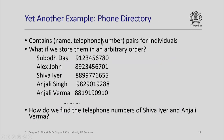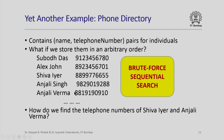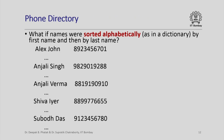Here is yet another example: consider a telephone directory, which usually consists of name and telephone number pairs. Suppose I listed out this telephone directory in a completely arbitrary order and asked you to find the telephone numbers of Shiva Iyer or Anjali Verma. Because the names are in completely arbitrary order, you would have to do a brute-force sequential search — looking at one name, then the next, until you find the right entry. This is very inefficient computationally.